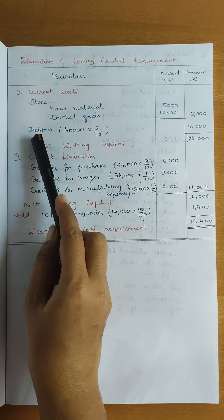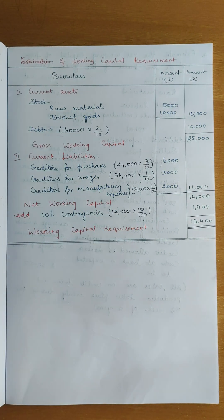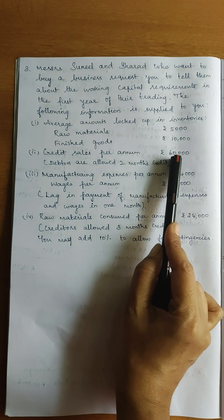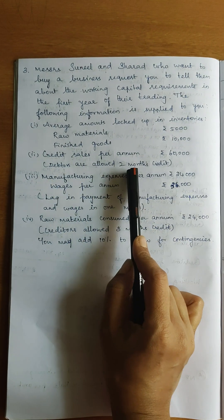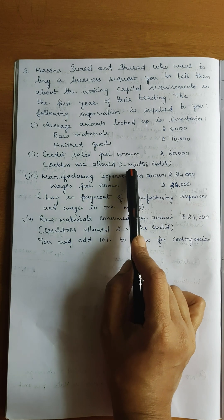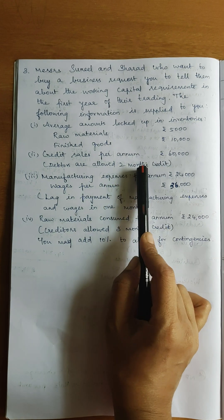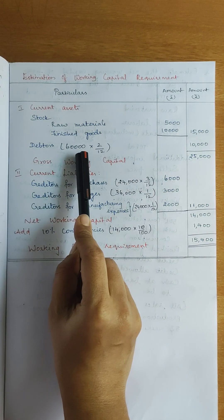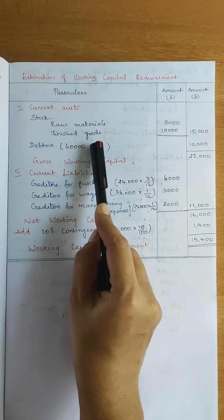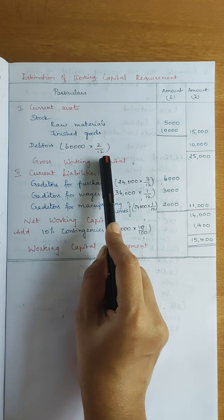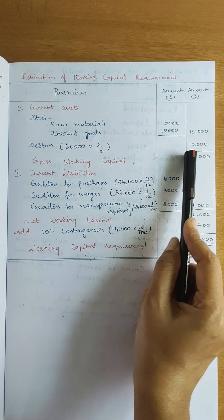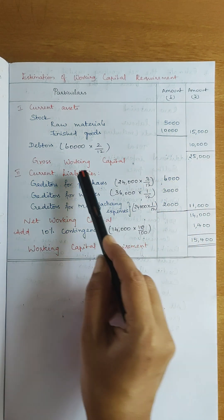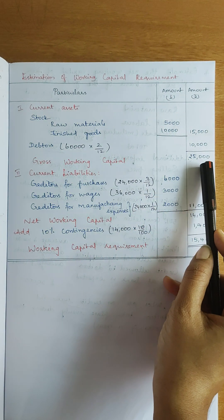Next, debtors. How do we calculate debtors? Debtors are calculated from credit sales. Credit sales per year are 60,000, and the debtors' payment period is 2 months. So convert to months: debtors = 60,000 × 2/12 = 10,000. So 15,000 plus 10,000 — gross working capital is 25,000.